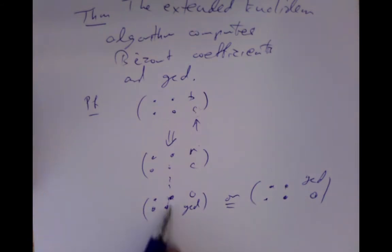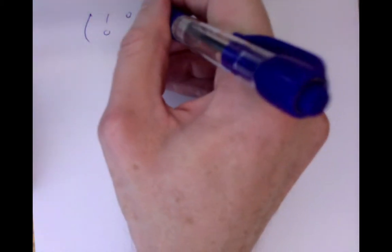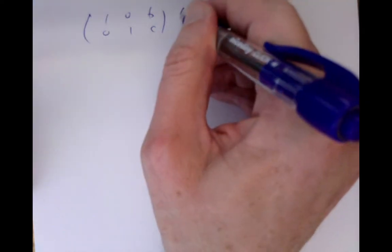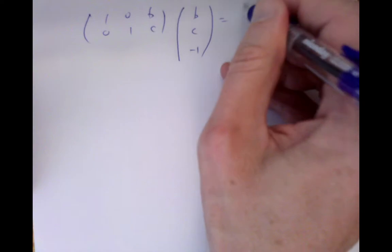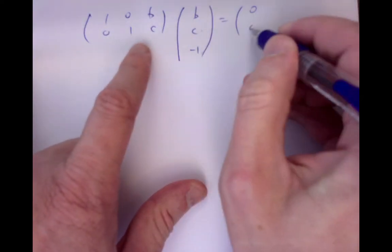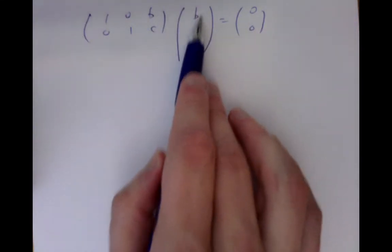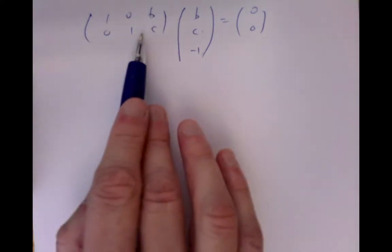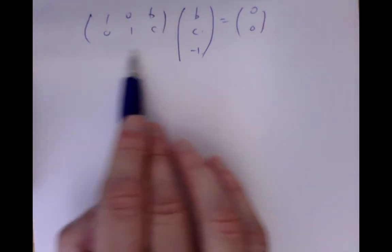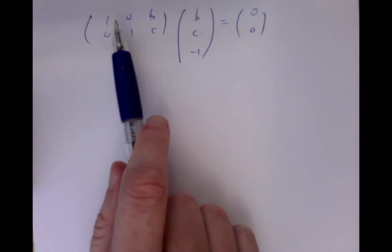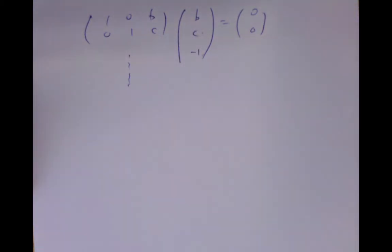So let's think about those four entries in the first two columns. When we start, we have the identity matrix — 1, 0, 0, 1 — and some number b and some number c. What I want to claim is that this matrix satisfies a very simple linear equation: the vector (b, c, -1) is in the kernel. If you expand that out: 1·b plus 0·c minus b gives zero; and 0·b plus 1·c minus c gives zero. So the matrix we started with multiplies by this vector to give zero.